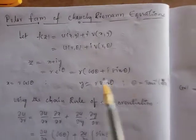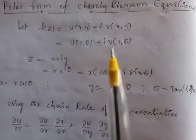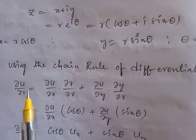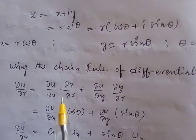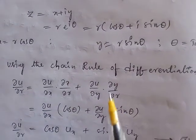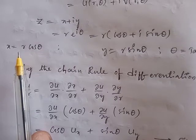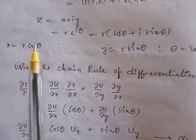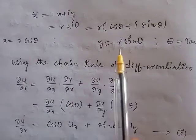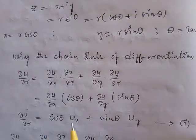In f(z) = u + iv, I am using the chain rule of differentiation to find ∂u/∂r. Since u is a function of x, y: ∂u/∂r = (∂u/∂x)·(∂x/∂r) + (∂u/∂y)·(∂y/∂r). Now, x = r·cosθ, so ∂x/∂r = cosθ (since θ is constant). And y = r·sinθ, so ∂y/∂r = sinθ. After simplification: ∂u/∂r = cosθ·Ux + sinθ·Uy.